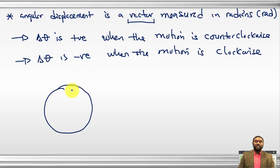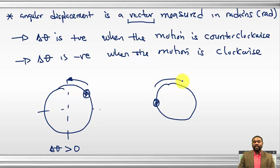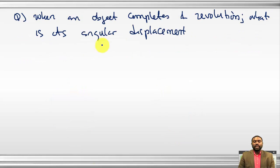If an object moves around a circle in the counterclockwise direction, delta theta is positive. If it moves in the clockwise direction, delta theta is negative.